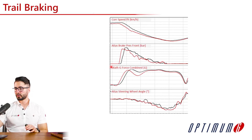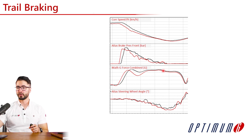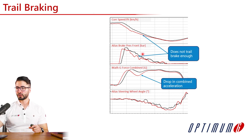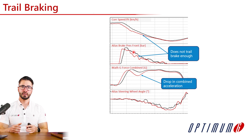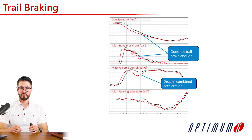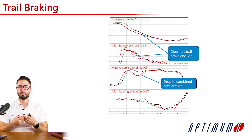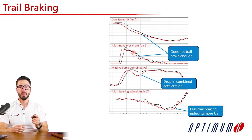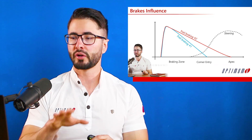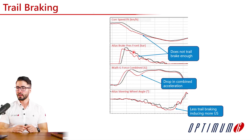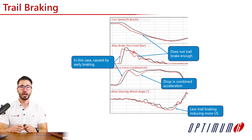Now let's look at a real example. First, we are going to look at the combined acceleration channel. We can see that the baseline driver has a lot more consistent combined acceleration, while the driver in red is dropping a lot more between braking and lateral acceleration. This tells me that the driver is possibly not trail braking enough. Next, we are going to look at the brake profile and confirm that he is not trail braking as much as the other driver. Since he is not trail braking as much, not only is he not exploiting all of the combined grip of the tire, but he is also inducing more understeer on the car since he is not loading the front axle.